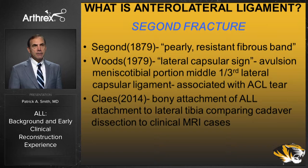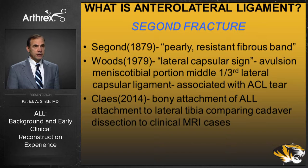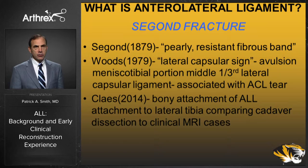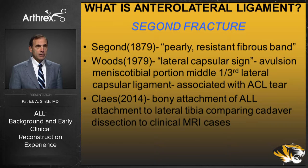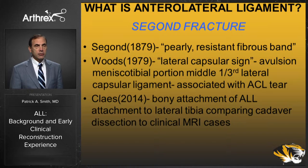Segond described this pearly resistant fibrous band of tissue. Woods came along in 1979 and published on what he termed the lateral capsular sign, representing an avulsion of the meniscal-tibial portion of the middle third lateral capsular ligament, noting its association with an ACL tear — that's how the lateral capsular sign became pathognomonic with an ACL tear. Stephen Kleiss then compared Segond fracture locations on MRI to native ALL tibial insertions in cadavers, and the measurements matched exactly, confirming that the Segond fracture is an avulsion of the ALL off the tibia.